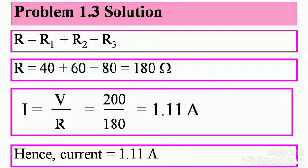Let's solve this problem. R, that is the total resistance, is equal to R1 plus R2 plus R3. You know that this is for series circuit. So R equals 40 plus 60 plus 80, which gives you 180 ohms.